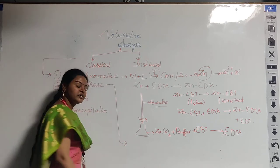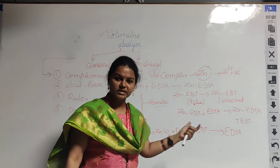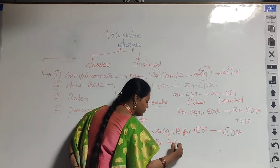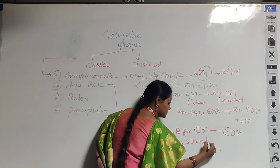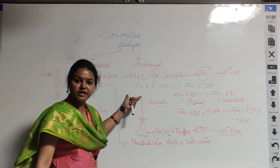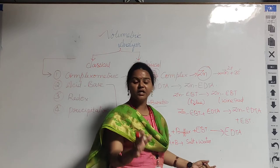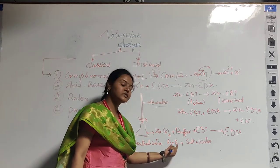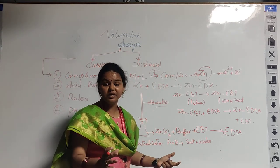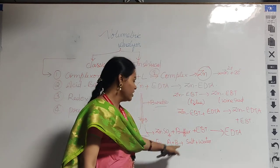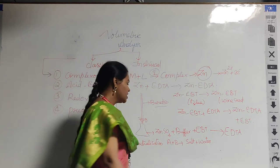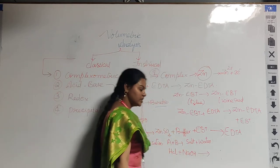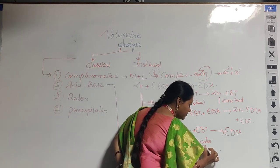Next, acid-base titrations: an acid reacts with a base in what is called a neutralization reaction. When an acid reacts with a base, it gives salt and water. This is also a visual titration like complexometric titrations, so it needs an indicator that gives a colour change at the endpoint. Strong acid–strong base, weak acid–strong base, or strong acid–weak base combinations can be used in the presence of an indicator, forming salt and water.